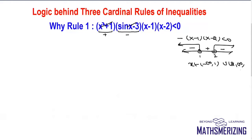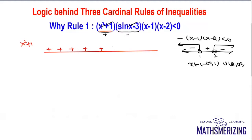Now what's the logic behind this rule? I'll examine each expression. x squared plus 1 is positive for all x belonging to R — it cannot take a negative value, so it will always be positive for all x in R.